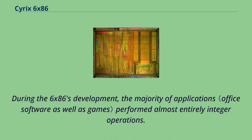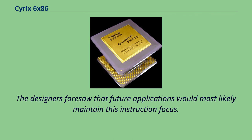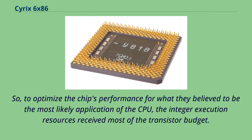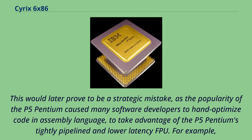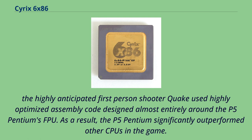During the 6x86's development, the majority of applications performed almost entirely integer operations, and the designers foresaw that future applications would most likely maintain this instruction focus. So, to optimize the chip's performance for what they believed to be the most likely use case, the integer execution resources received most of the transistor budget. This would later prove to be a strategic mistake, as the popularity of the P5 Pentium caused many software developers to hand-optimize code and assembly language to take advantage of the P5 Pentium's tightly pipelined, lower-latency FPU. For example, the highly anticipated first-person shooter Quake used highly optimized assembly code designed almost entirely around the P5 Pentium's FPU.